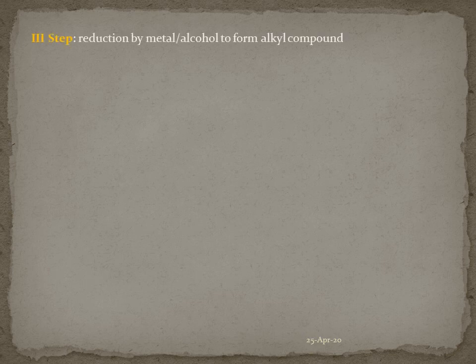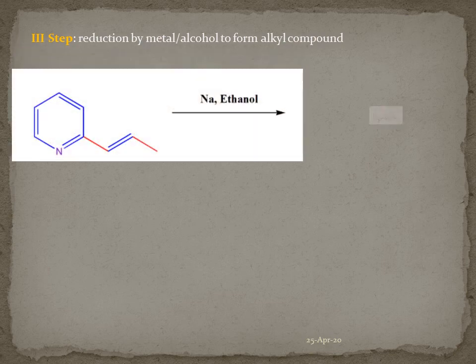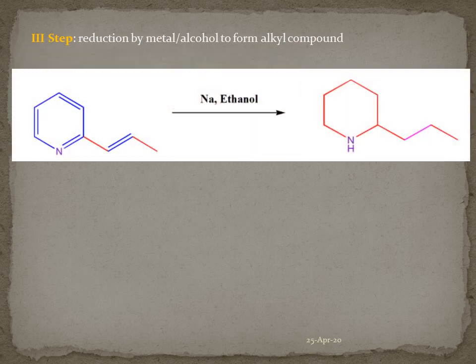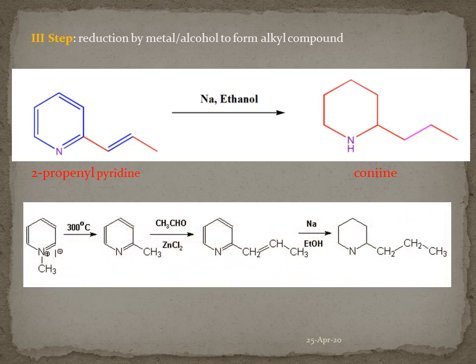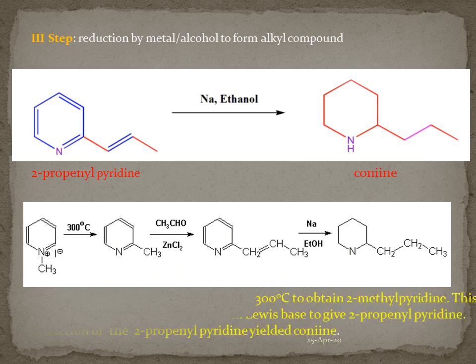In the last step, we have a pyridine ring with an alkyl side chain containing a double bond. In conine we have piperidine and an alkyl side chain without a double bond. To reduce all the double bonds we need a metal-alcohol medium. So 2-propenylpyridine, when treated with sodium and ethanol, has all double bonds reduced to give conine. This is the overall synthetic procedure for the synthesis of conine — all three steps merged together.